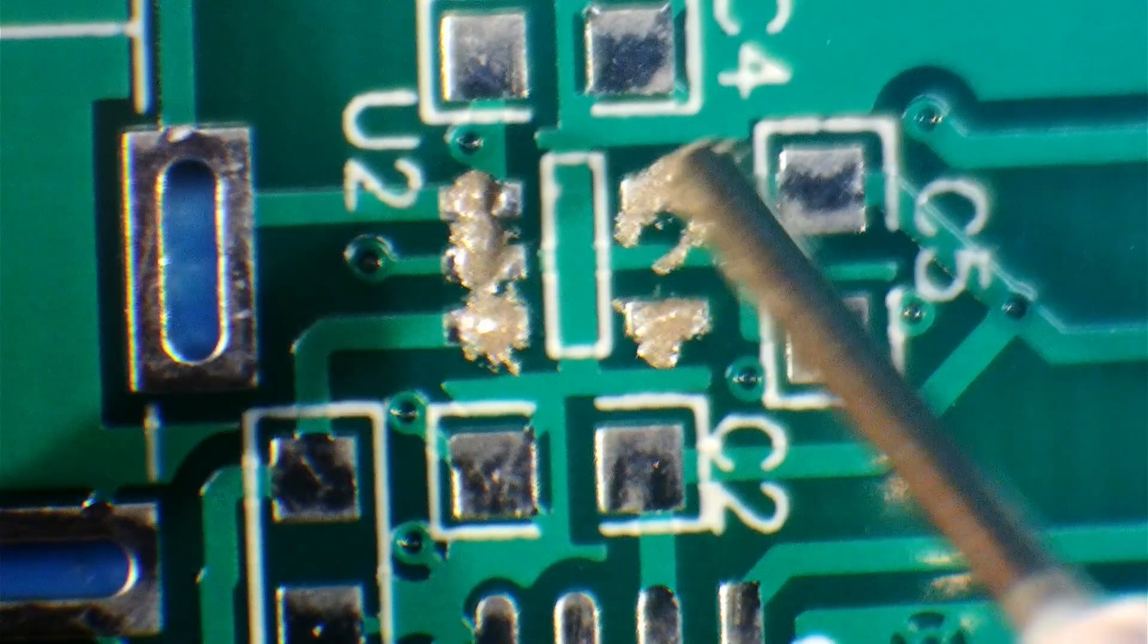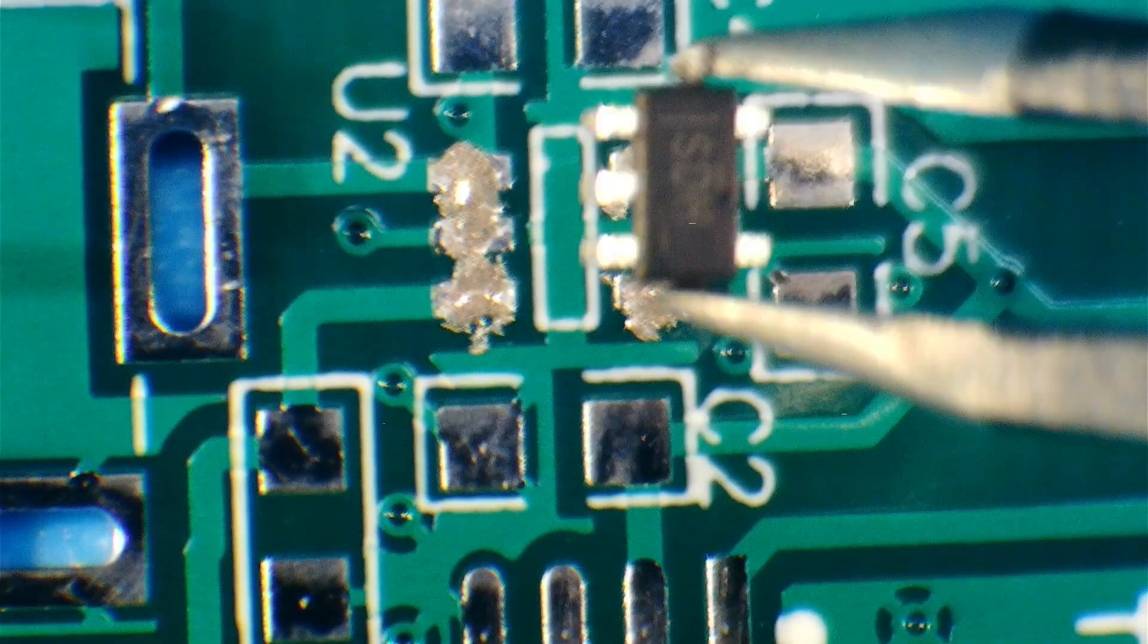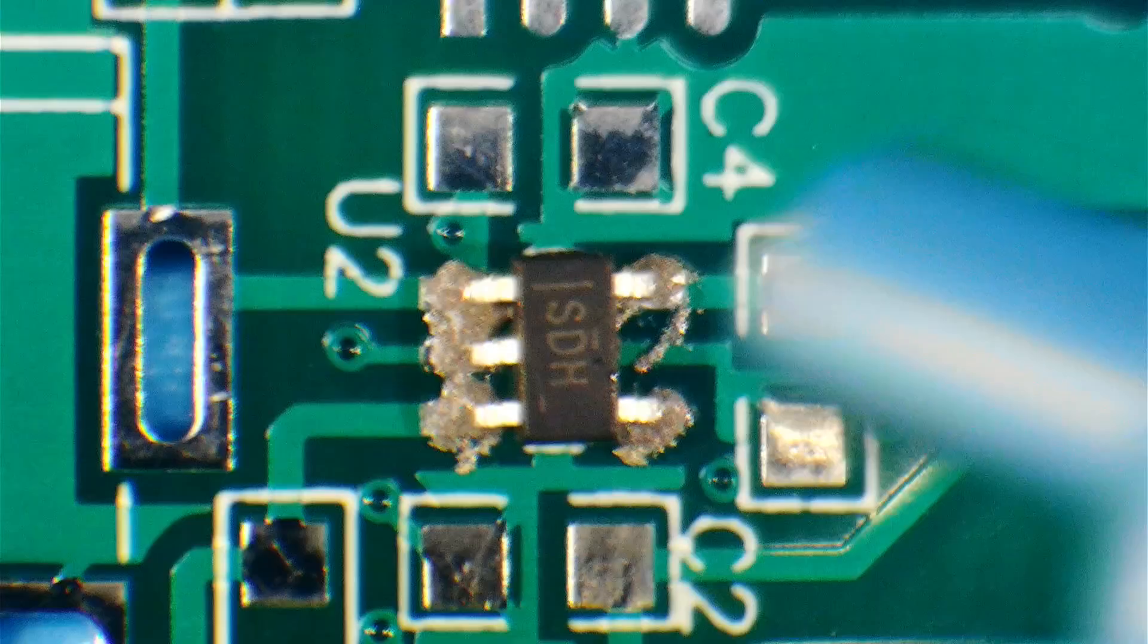I'm also going to use the paste and hot air method for the first IC. Once again, the paste can be a little bit sloppy.